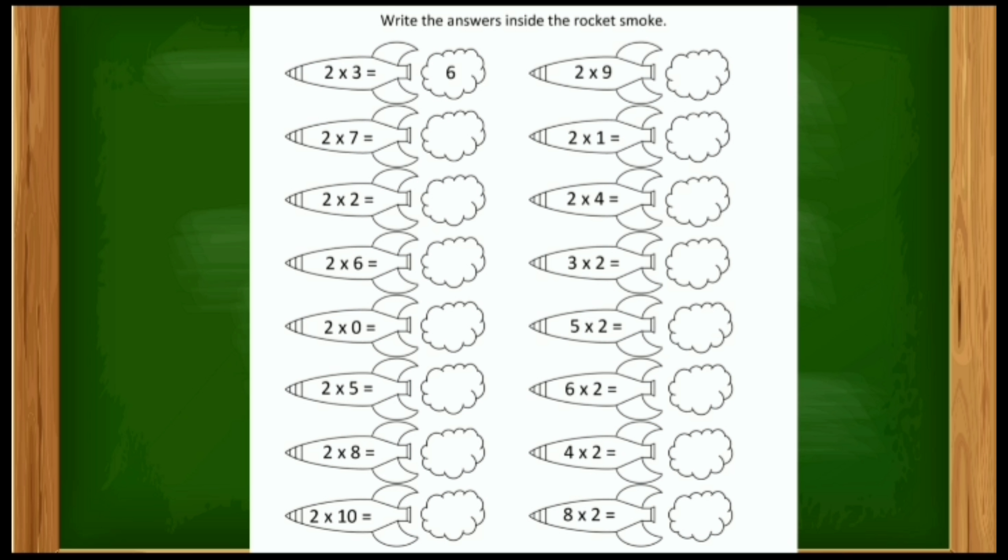Two fives are ten. Two eights are sixteen. Two tens are twenty. Very good! Now, coming to two nines are eighteen. Two ones are two.